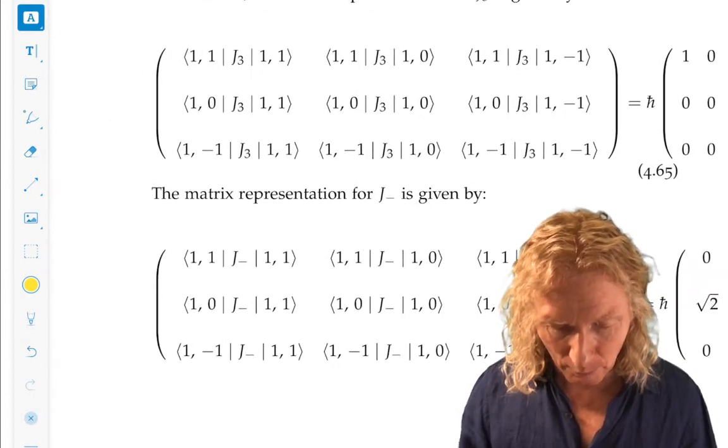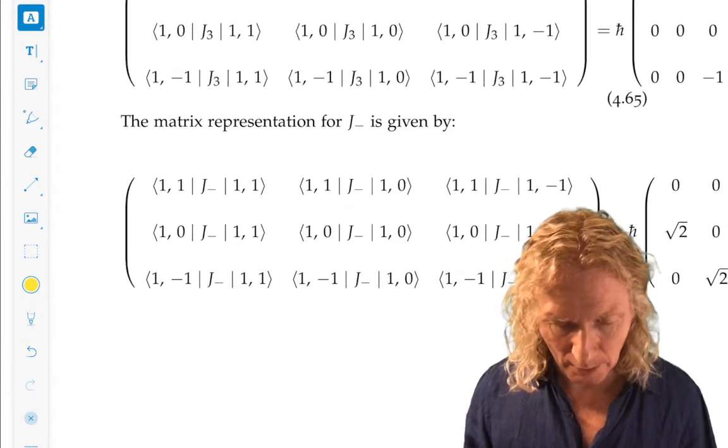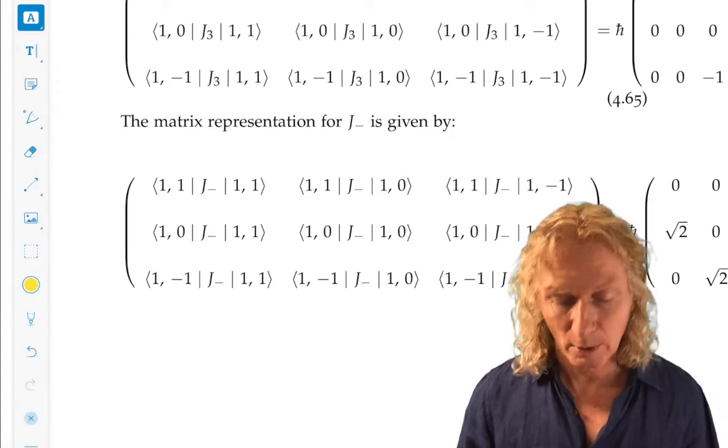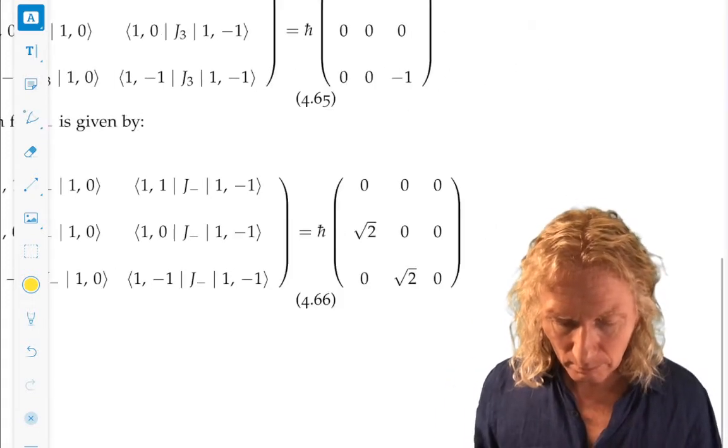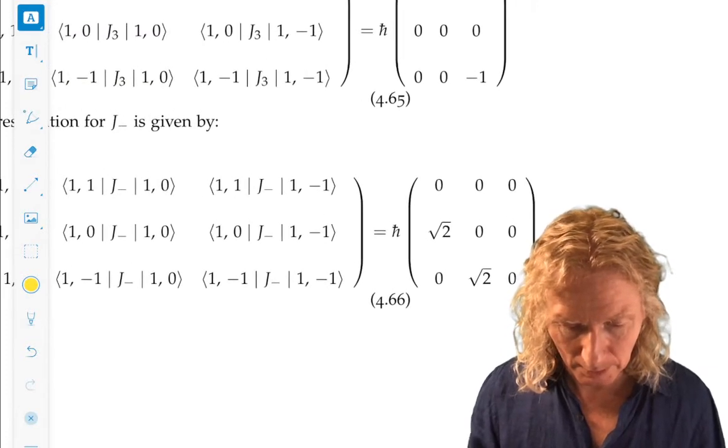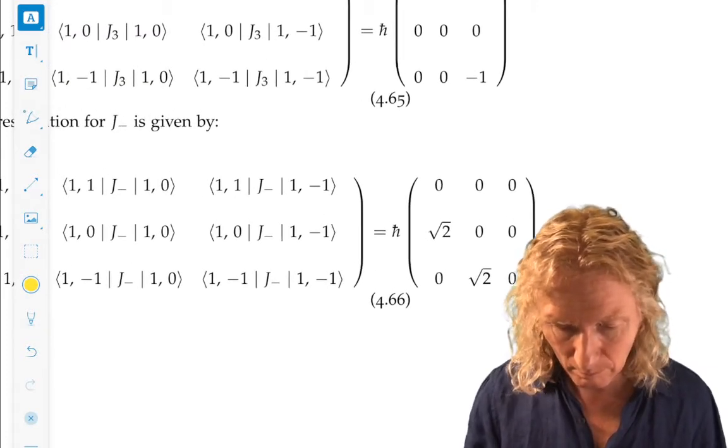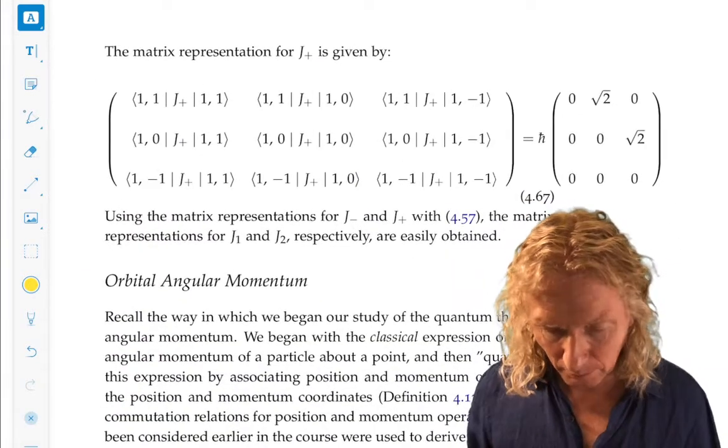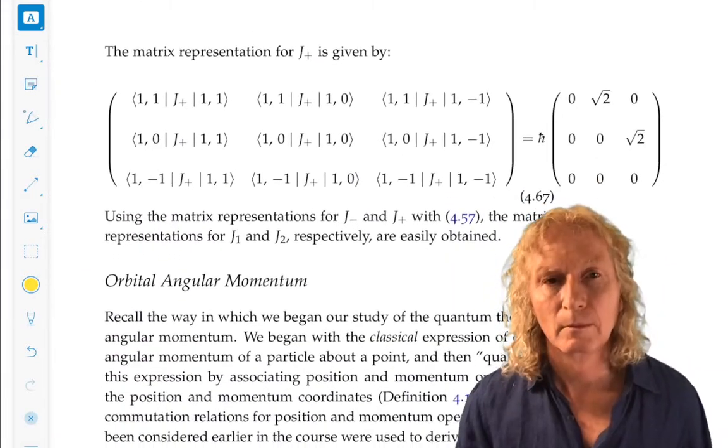Now we do the same thing. We calculate j minus and j plus, and then we add them together in the right way to get j1 and j2. So that's j minus, and this is j plus.